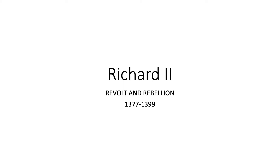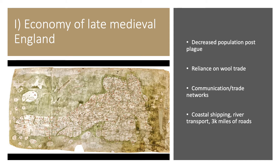This lecture looks at the state of the economy in England post-plague, then moves into the reign of Richard II, which faced a number of challenges including the Peasants' Revolt and baronial rebellion. In late medieval England, the entire continent had been impacted by the plague. However, the decreased population does relieve some of the internal pressure that was being caused by overpopulation and land shortages, providing some opportunity for those who survived to rebuild.